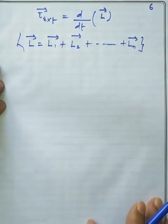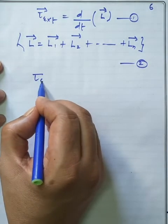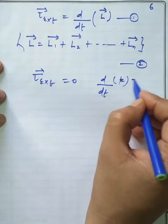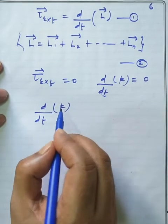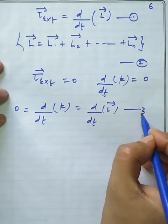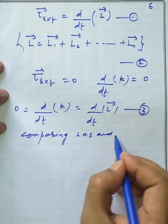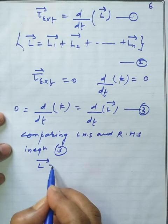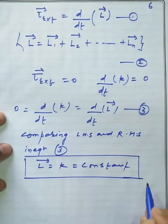Since you are not yet fully familiar with rotational dynamics, we use the hypothesis: this is equation 1 and equation 2. If the external torque on the system is zero, then in the derivative part, d/dt of a constant equals zero. Setting 0 = d/dt of k = d/dt of L, and comparing both sides, L remains equal to k, that is, a constant. This is the explanation of the conservation of angular momentum.